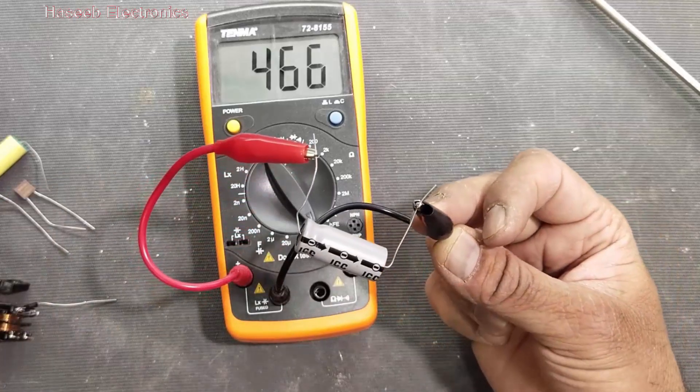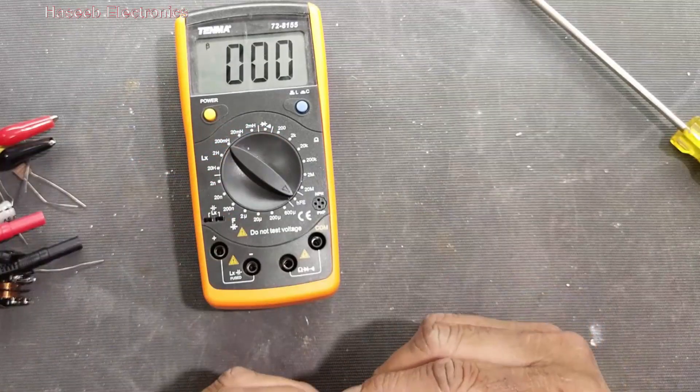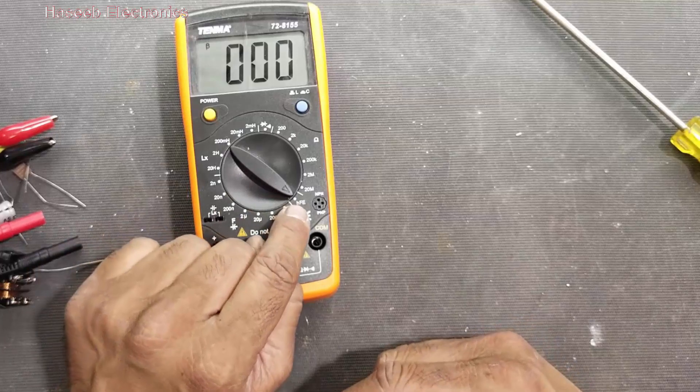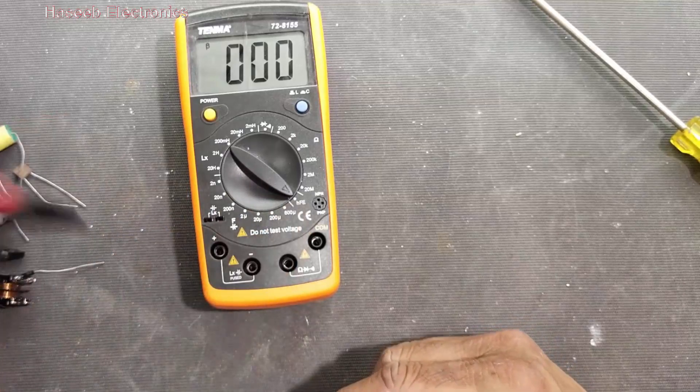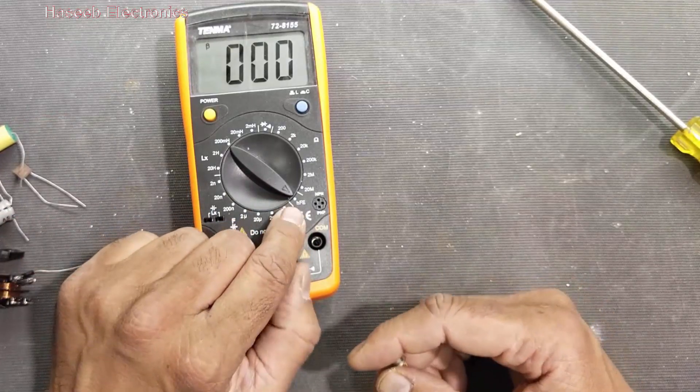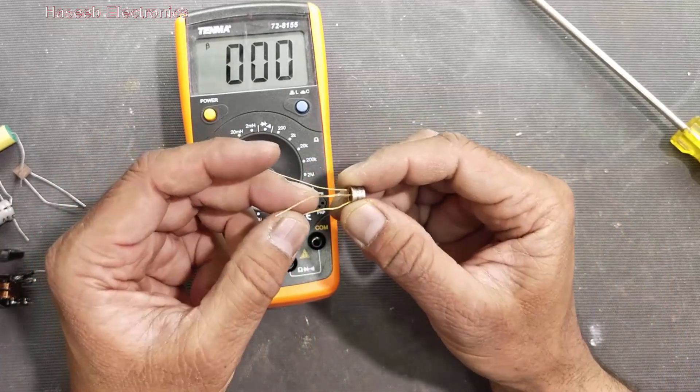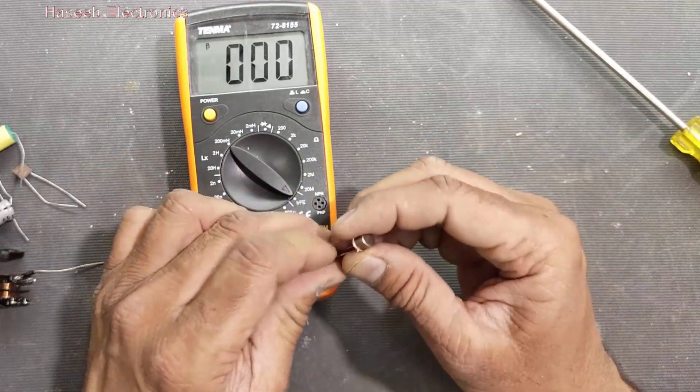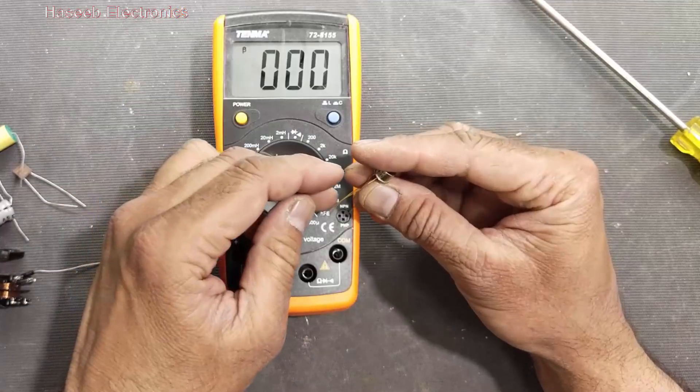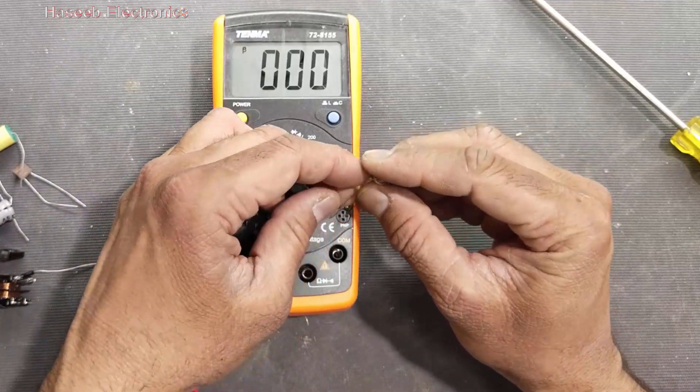Negative to negative terminal, it is 467. Then we have transistor HFE gain mode. In gain mode we can test this transistor, any transistor. We can insert it and insert the leads in the test jack.